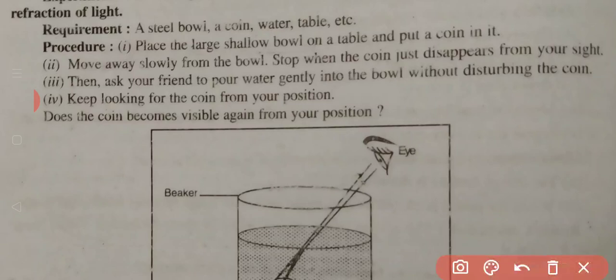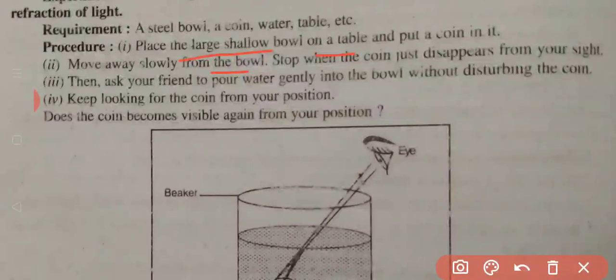Now, the procedure: Place the large shallow bowl on a table and put a coin in it. Move away slowly from the bowl, stop when the coin just disappears from your sight.